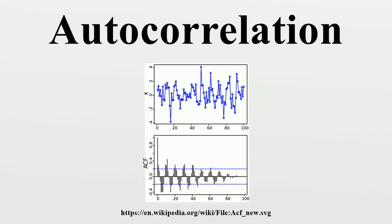Autocorrelation, also known as serial correlation or cross-auto-correlation, is the cross-correlation of a signal with itself at different points in time.